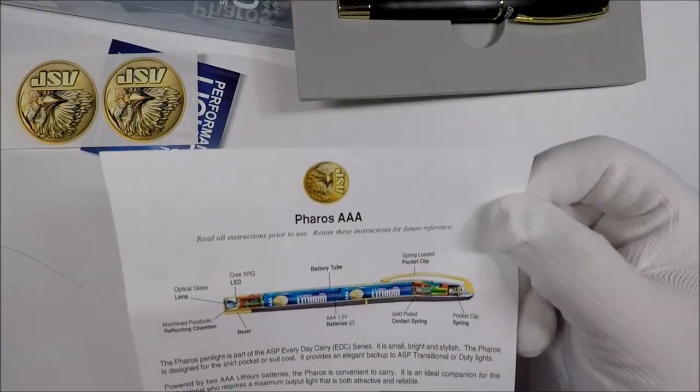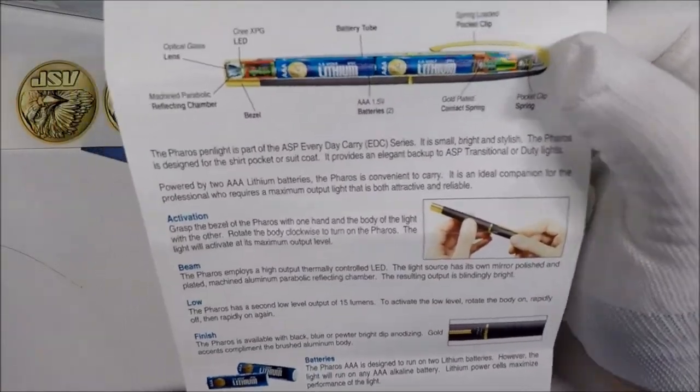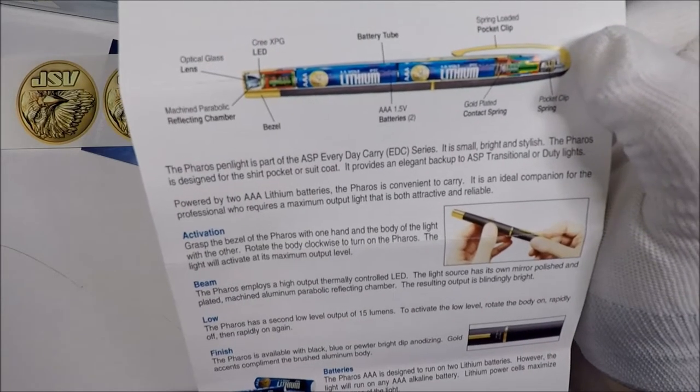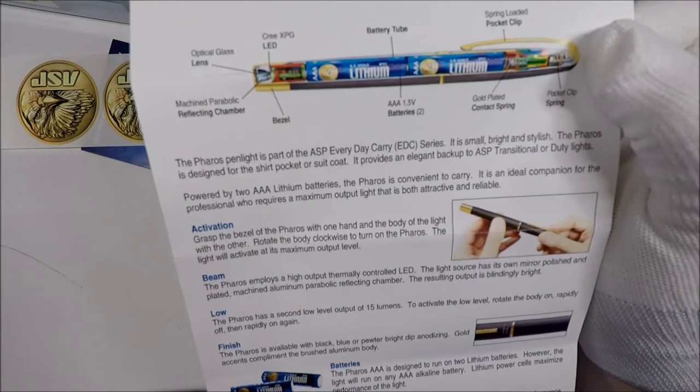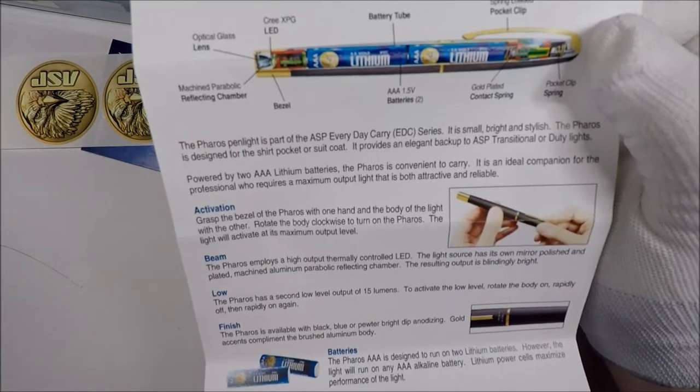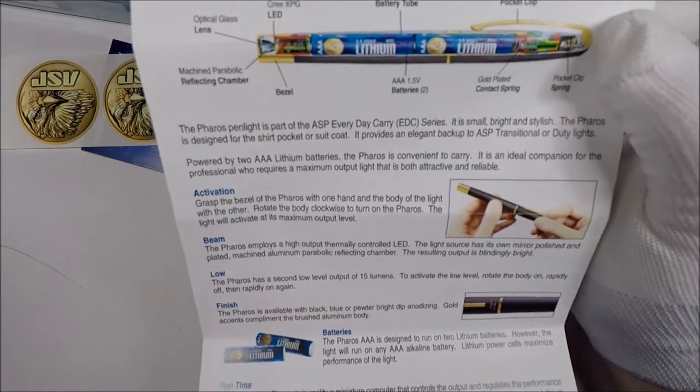So it tells us all the bits of the light, which is kind of interesting. Grasp the bezel of the pharaohs with one hand and the body with the other, rotate clockwise. Light will activate at its maximum output level. Rotate the body rapidly off and then on again.